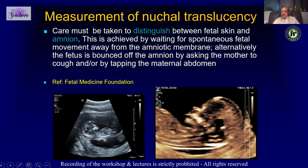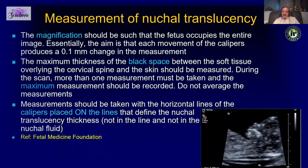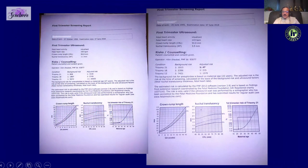The fetus must be in a neutral position — neither flexed nor extended. Adequate magnification is very important. We measure only the black space, placing the calipers on the line between the two echogenic lines — that is the nuchal translucency.